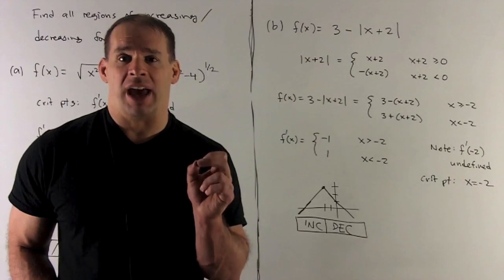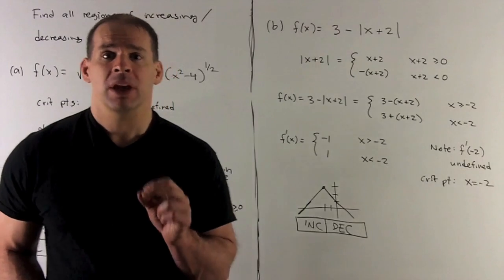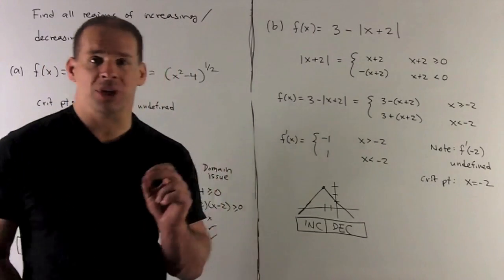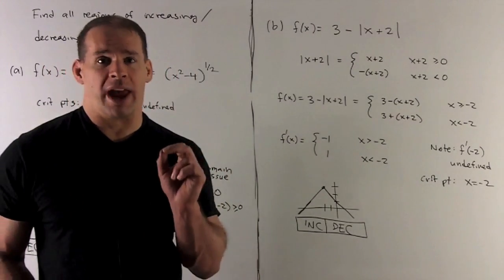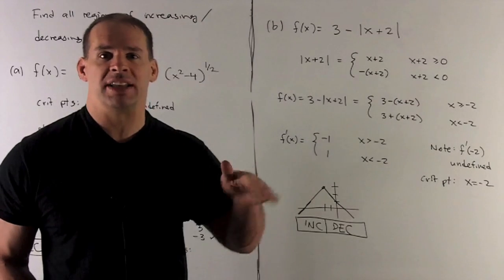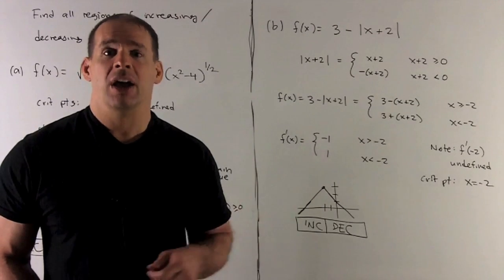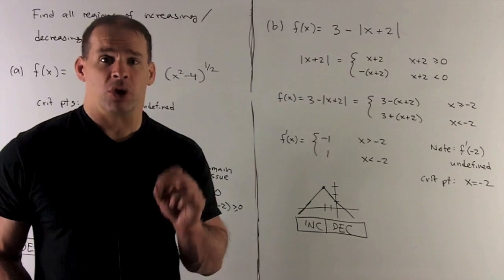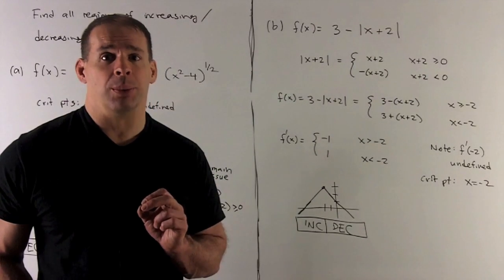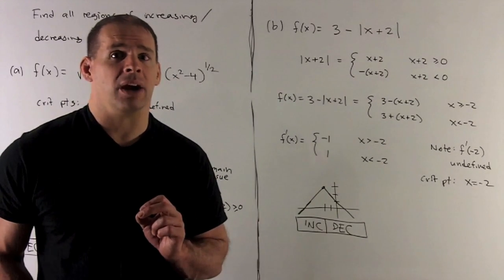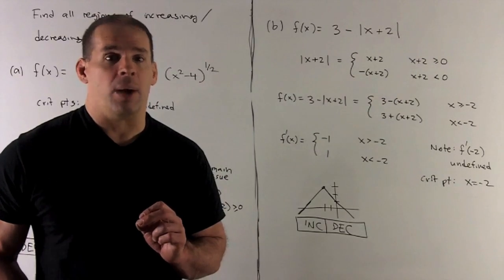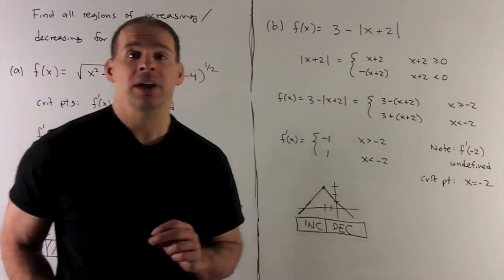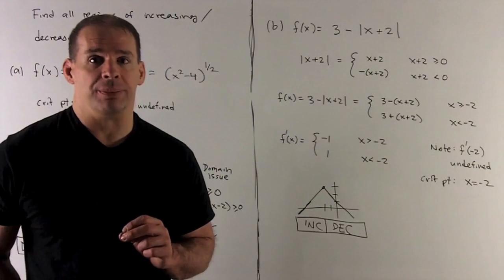There's no tangent line at x = -2, confirming we have a critical point there where the derivative is undefined. We draw a dividing line at x = -2 and check one point in each region.